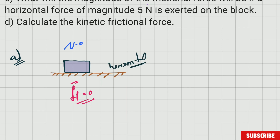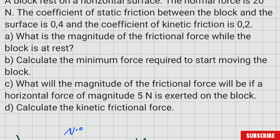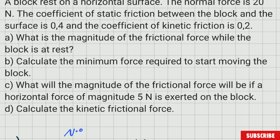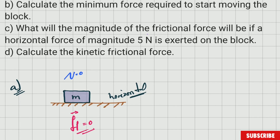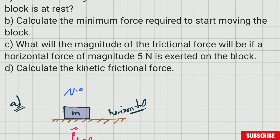If the surface is not horizontal, things change and we'll look at that eventually. But here the block is not trying to move — it is at rest on a horizontal surface — and therefore the frictional force is zero. As long as the object is in that situation, the frictional force is zero.